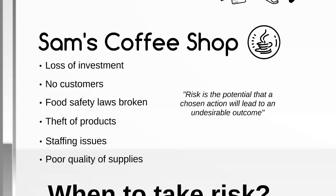The formal definition — important for the CIMA syllabus — is that risk is the potential that a chosen action will lead to an undesirable outcome. For example, looking at Sam, he goes to a certain supplier for coffee beans at a good rate: what's the risk that that chosen action will lead to the undesirable outcome of poor quality beans? When he hires a particular staff member, what is the risk that they will turn out to be a poor employee?